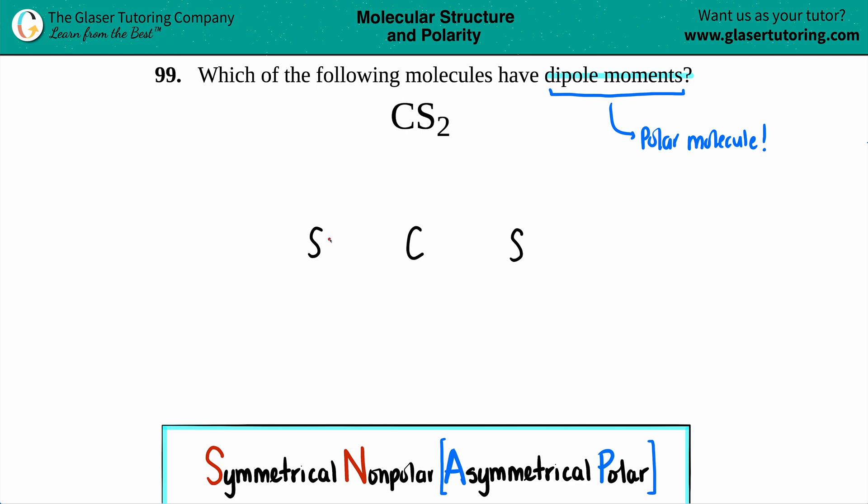Since carbon needs that octet rule, it needs a double bond on both sides because carbon only has four valence electrons: one, two, three, four. And then for sulfur, sulfur needs the octet as well, so it needs the